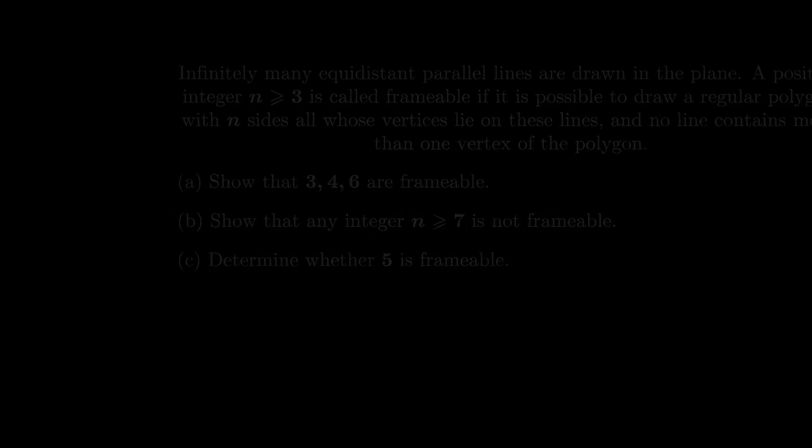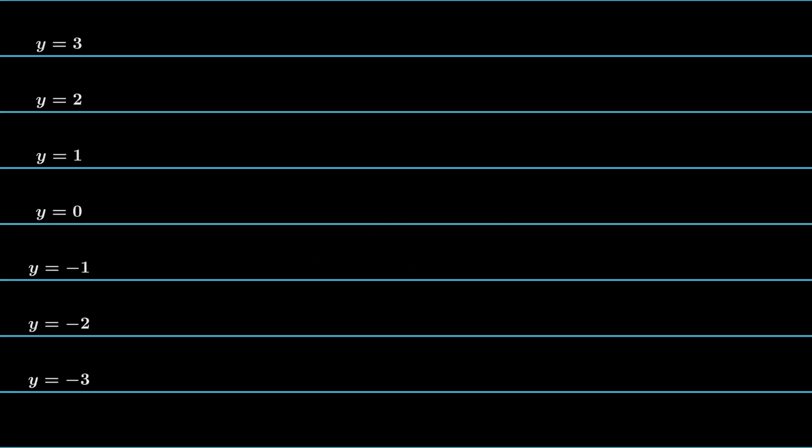So let me start by setting up some notations that I'm going to work with. I assume that the lines are parallel to the x-axis, and each of them has integer ordinate. This means the lines are given by the equation y equals 0, y equals 1, y equals 2, etc.